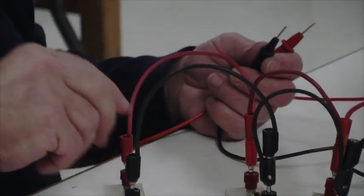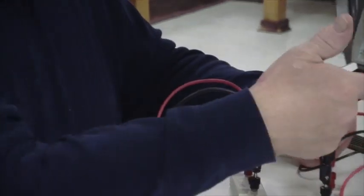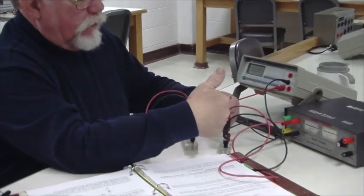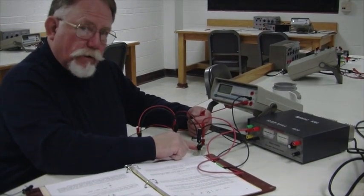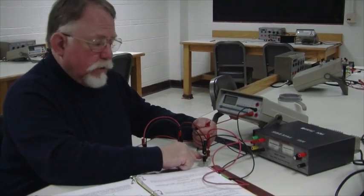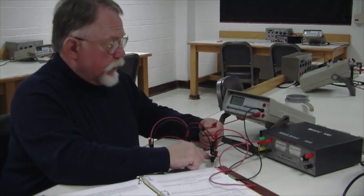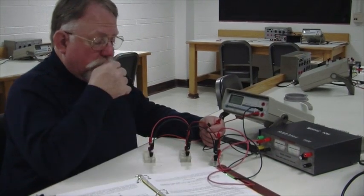So what's happened to that current? Well, current comes in here. It goes out here, but it can also go through this resistor. So let's check and see how much is going through the resistor.